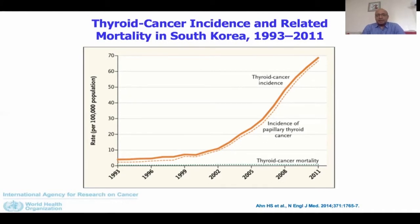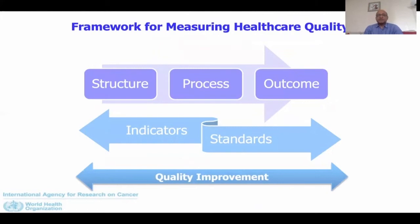The whole idea of quality in cancer screening is to ensure that harms are minimized and benefits are maximized. There is a very specific protocol of quality improvement in cancer screening. That protocol tells us to measure certain indicators, and we divide them into structural indicators, process indicators, and outcome indicators.